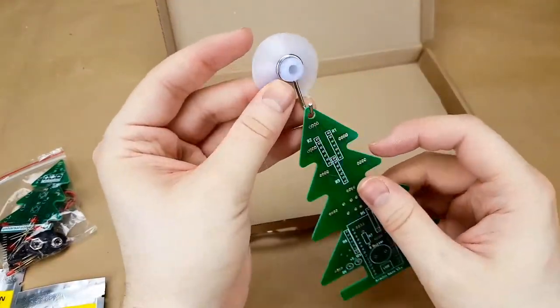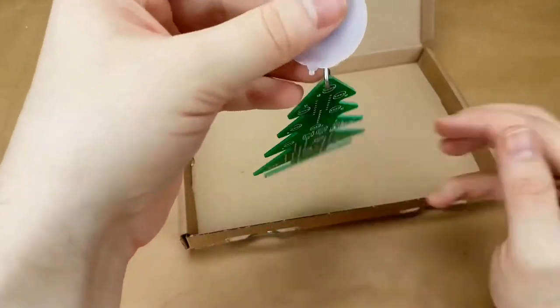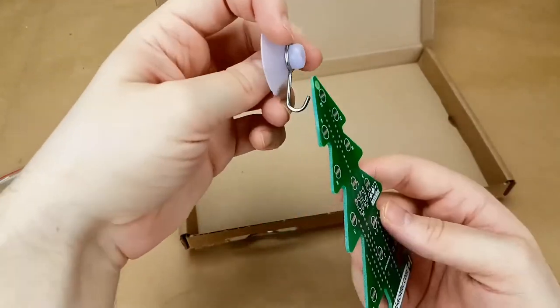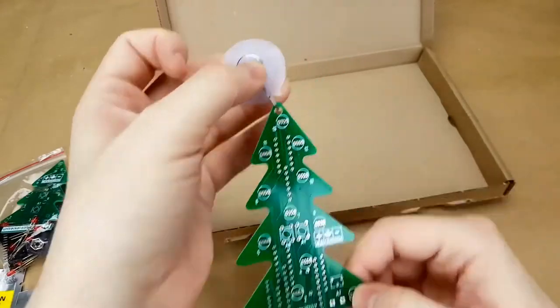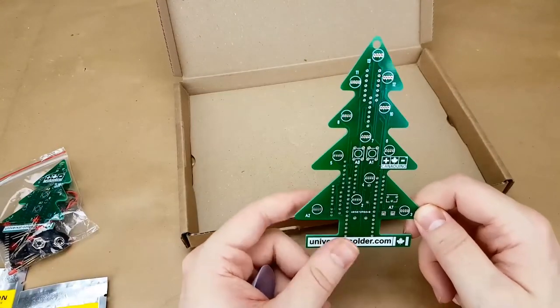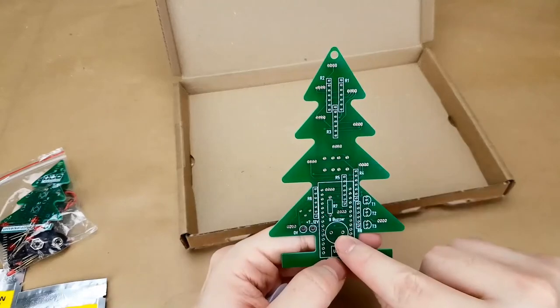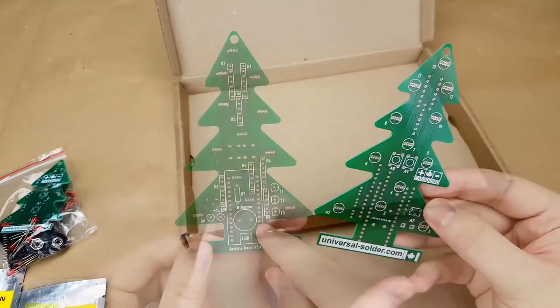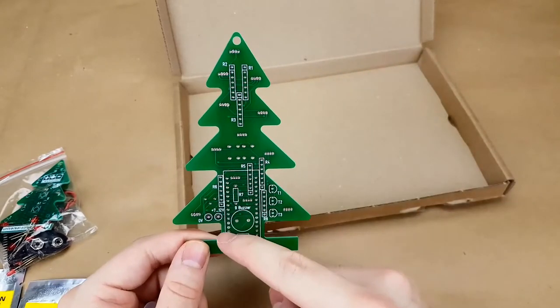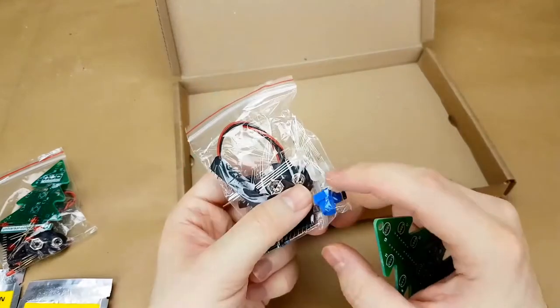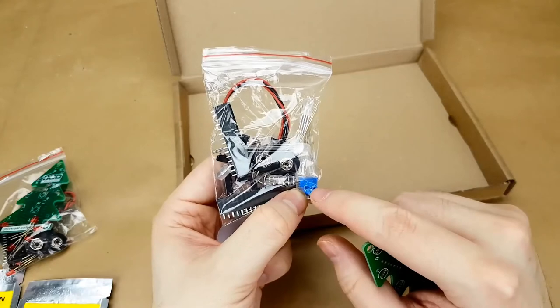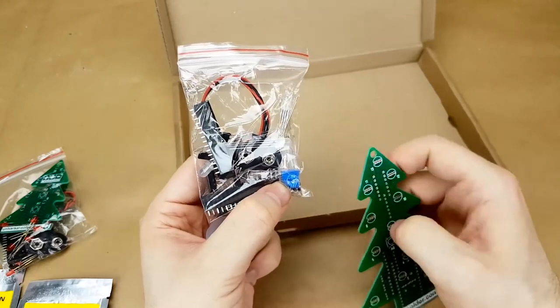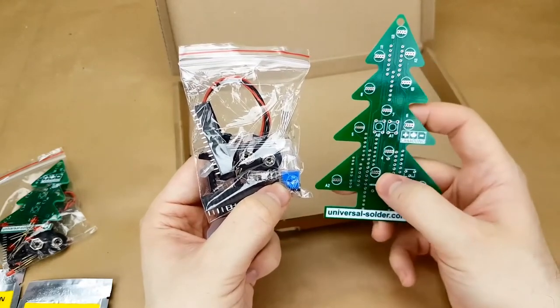The suction cup is for the top of the Christmas tree so you can stick it onto a surface and have it play. I think there's like 12 LEDs on the board. It has a little buzzer for playing music and the Arduino Nano plugs right on the back here. This one comes with a potentiometer so that you can increase or decrease the speed of the music and the LEDs blinking.